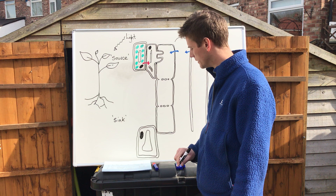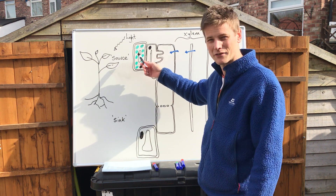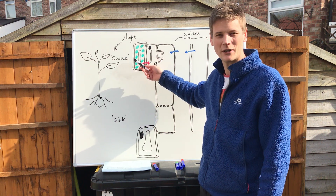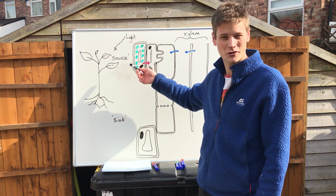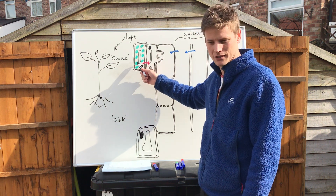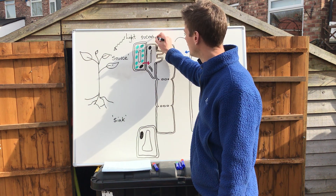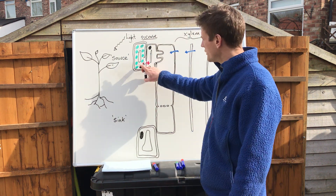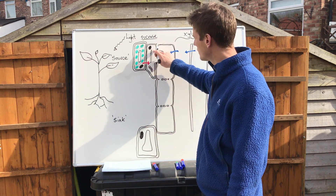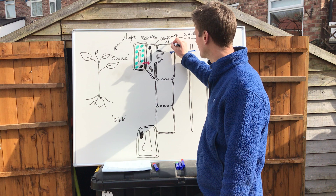Looking at the diagram on page 12, we've got a mesophyll cell — it may be a palisade mesophyll cell containing lots of chloroplasts. The chloroplasts contain the thylakoid membranes and stroma, where the photosynthetic reactions take place. It's at the mesophyll cells where those photosynthetic products are produced, and the one we're most interested in is sucrose.